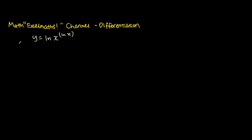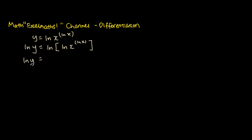The first step for this kind of question is to take ln of both sides. So the left-hand side will be ln y, while the right-hand side will be ln of the bracket ln x to the power of ln x. We can then bring the exponent down using the logarithms power rule, giving us ln y equals ln x times ln(ln x).